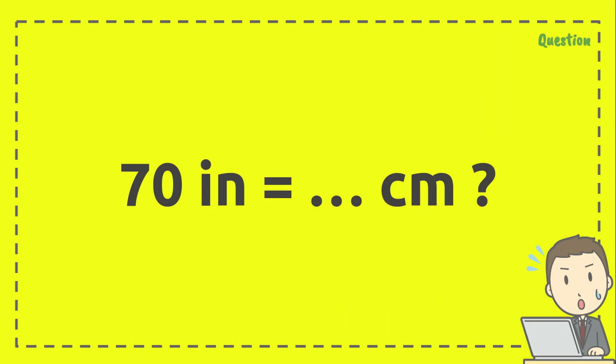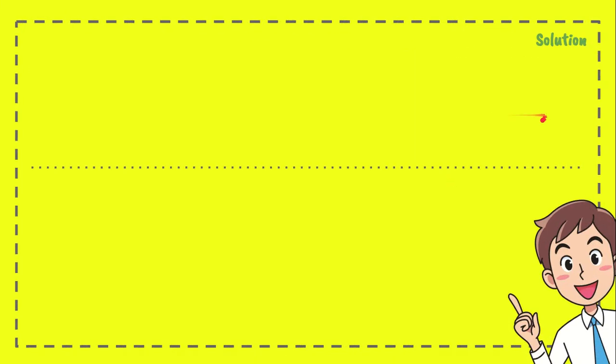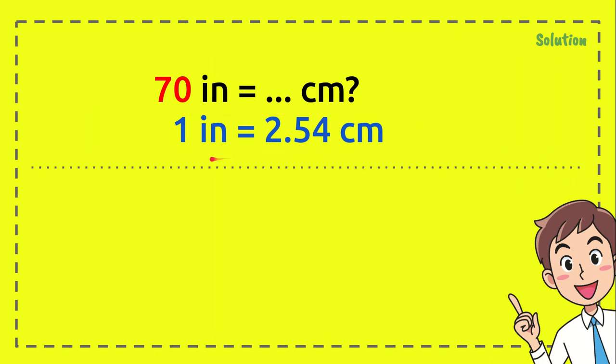Cool. And here is the question: 70 inches equals how many centimeters? That's the question, and this is the solution. This is how we solve the problem. First, just write again the question, and then just write again the formula.